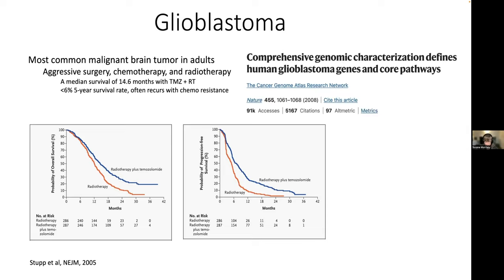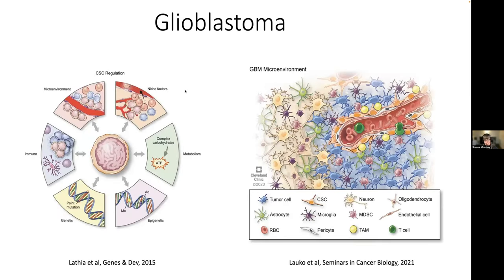Now in terms of understanding the disease, a lot more progress has been made. Glioblastoma was the first tumor profiled by the TCGA. The landmark paper came out in 2008, and it outlined the major genetic drivers of the disease and the major subtypes. Since then, lots of other work has gone out to delineate that these tumors are really heterogeneous in terms of the kinds of functional states that cells can have within the tumor.